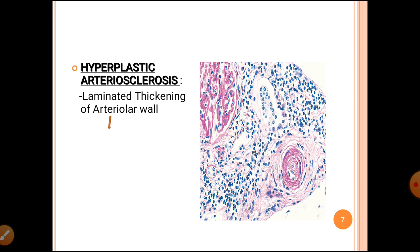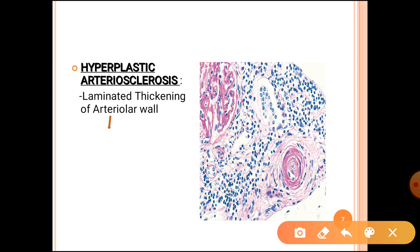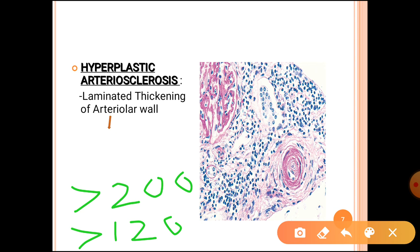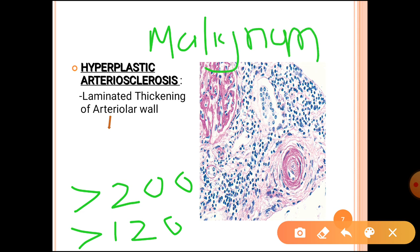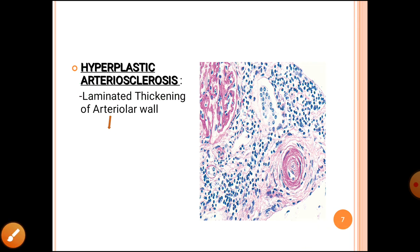In about 2 to 5% of cases of hypertension, blood pressure can rise to a systolic greater than 200 mm Hg and diastolic greater than 120 mm Hg, with symptoms of renal failure and multi-organ dysfunction. That hypertension is known as malignant hypertension. In malignant hypertension you will not see hyaline arteriosclerosis; instead there will be hyperplastic arteriosclerosis.